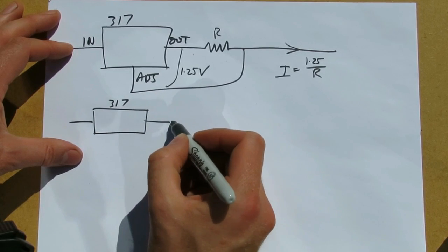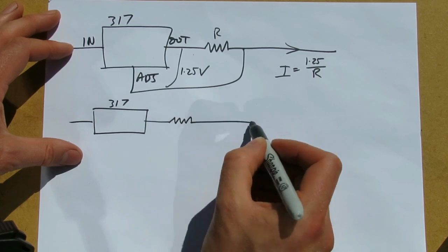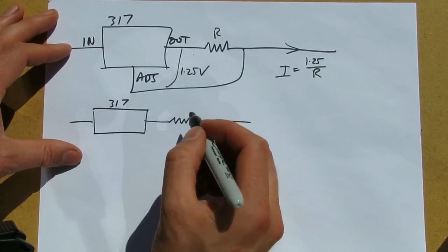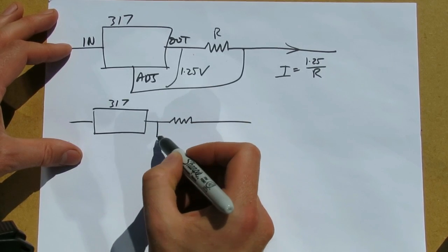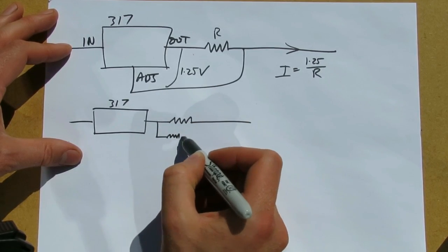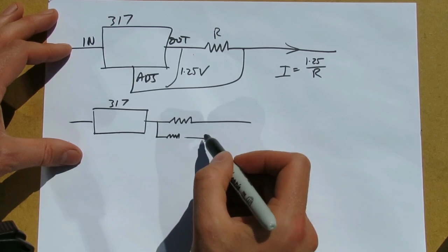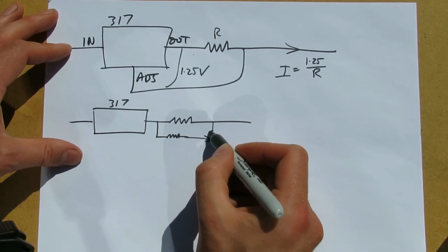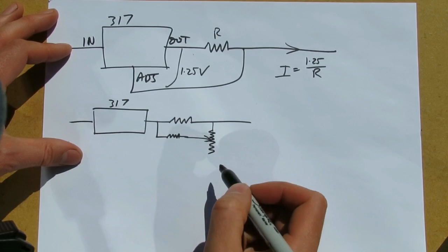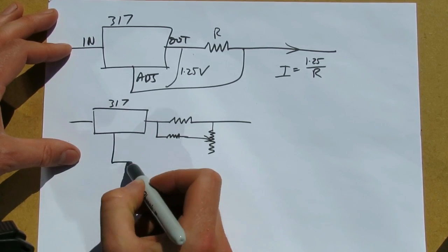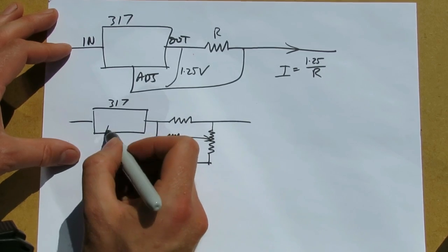With a series resistor on the output, there's another fixed resistor here going to a potentiometer, which then goes back to the adjustment terminal.